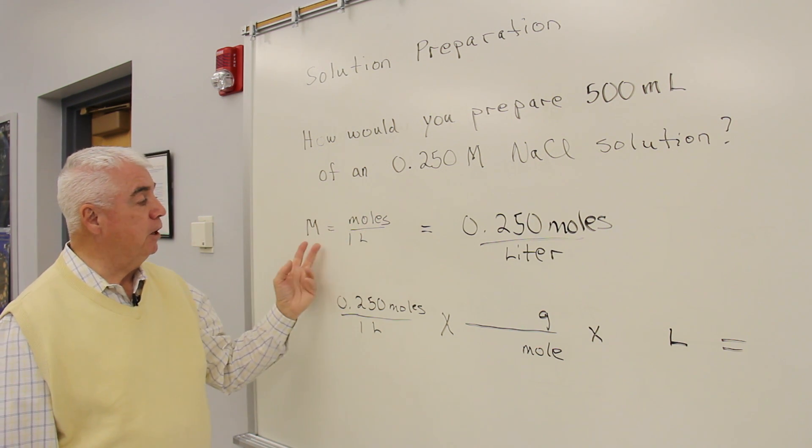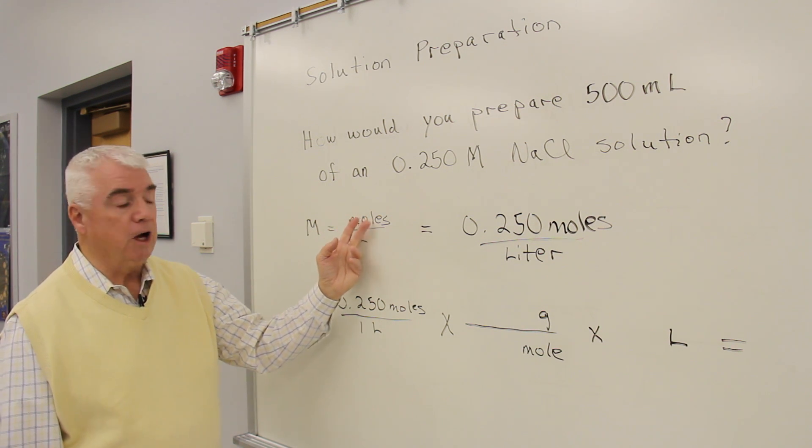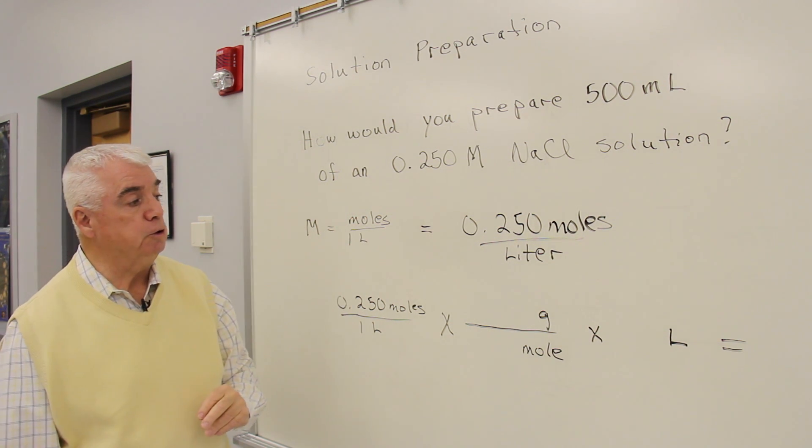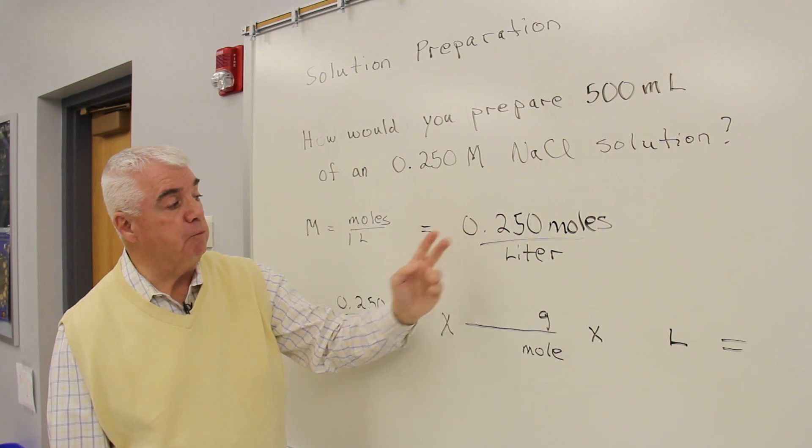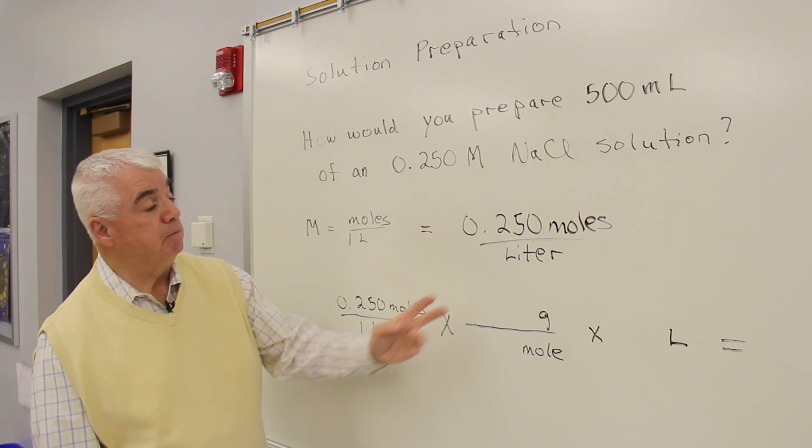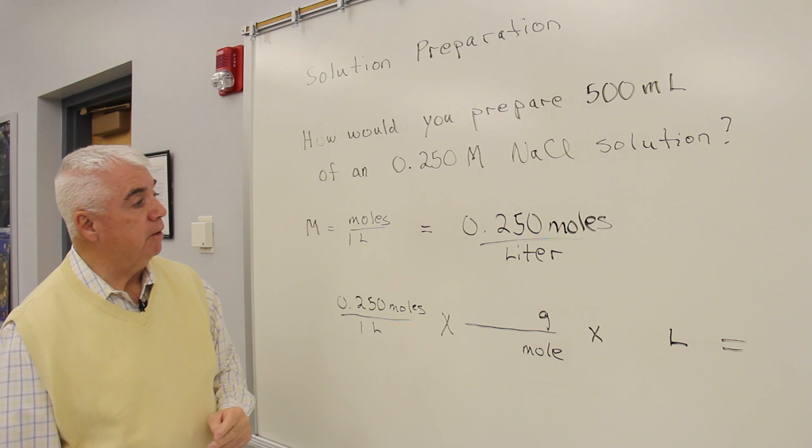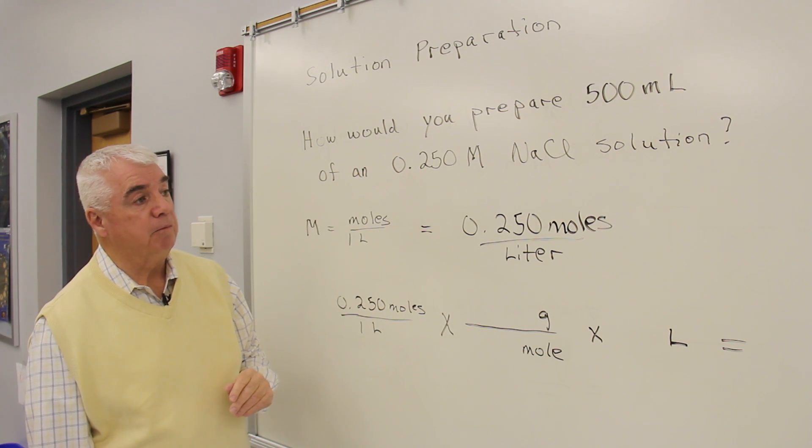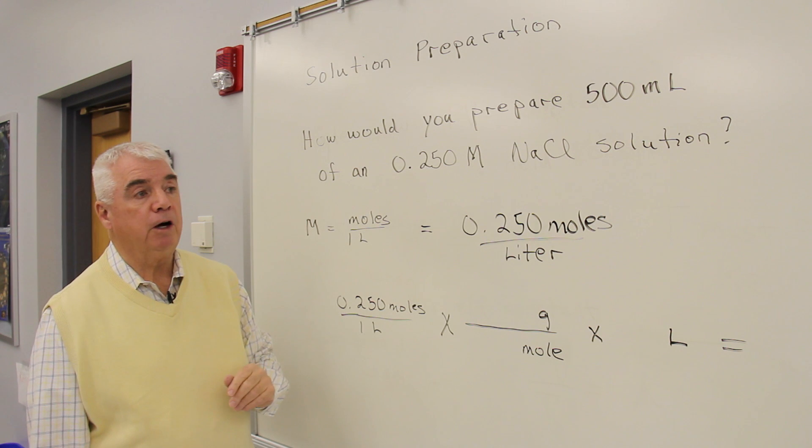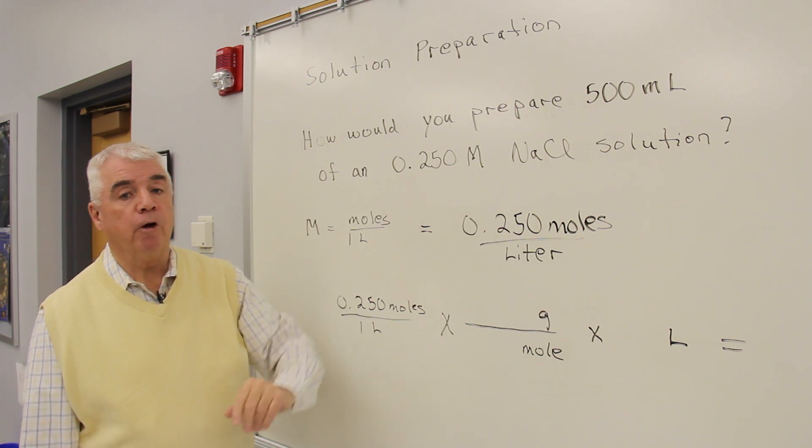You remember the formula for molarity is moles of solute over liters of solution. We're given this number, we have 0.250 moles per liter. And we could probably work this pretty easily using the formula for molarity and solve for grams.